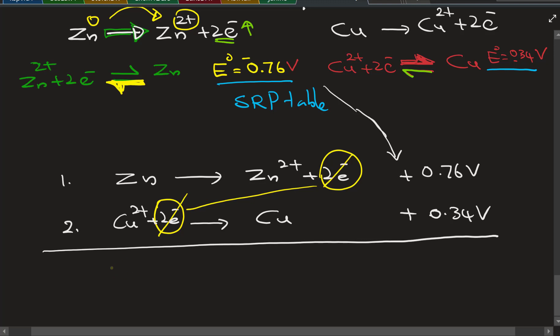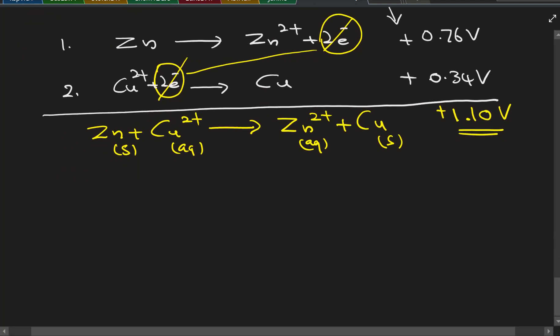The electrons should be balanced based on the least common denominator. You cancel out the electrons and add the left to the left, right to the right, and add the voltage as it is. No multiplication for the voltages because these are standard values. Now we can say zinc solid plus aqueous copper 2+ goes to zinc 2+ aqueous and copper solid. That's the overall reaction, the E-cell reaction.